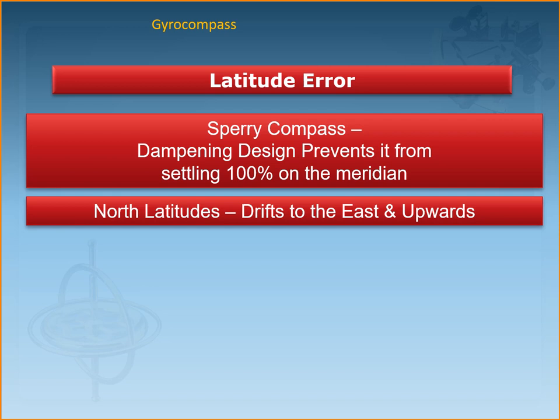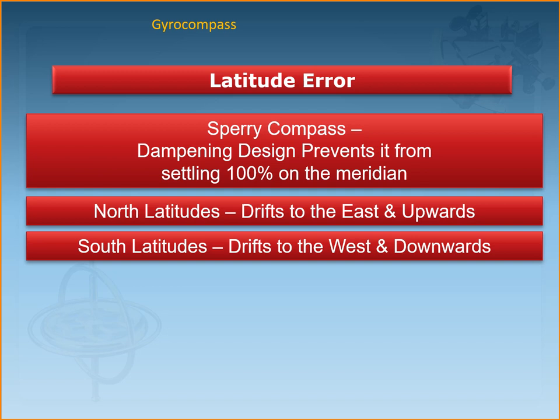Because of the design of some gyroscopes, the settling position is not in the true meridian but slightly to the east or west of it. The amount of latitude error — also sometimes called the damping error — is proportional to the tangent of the latitude. It can be calculated, tabulated, and applied accordingly. It can also be artificially removed for steering purposes by shifting the lubber line by an appropriate amount, which requires opening the system and adjusting the level line. This should normally be done by a qualified gyro compass adjuster.